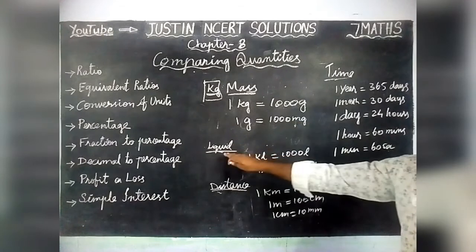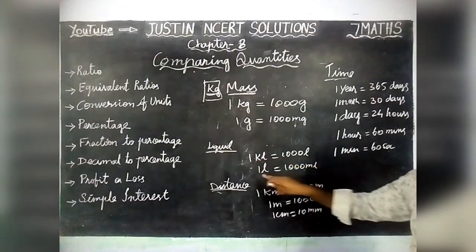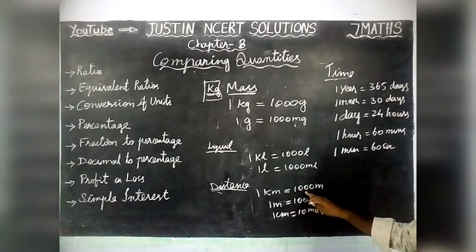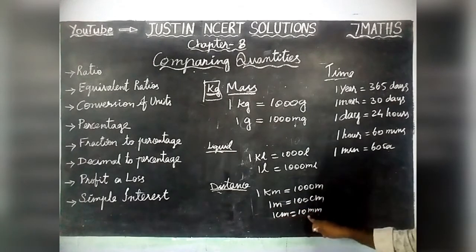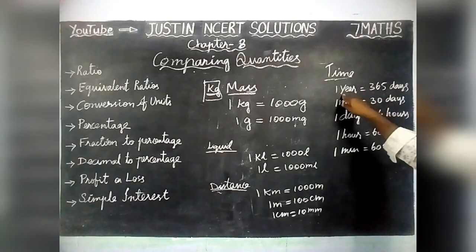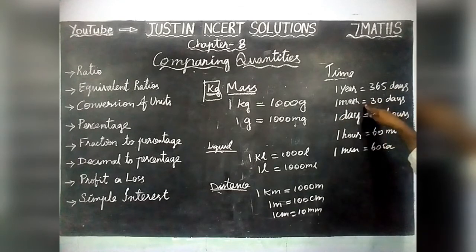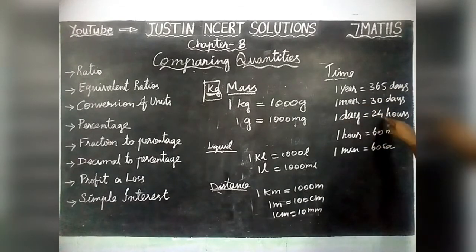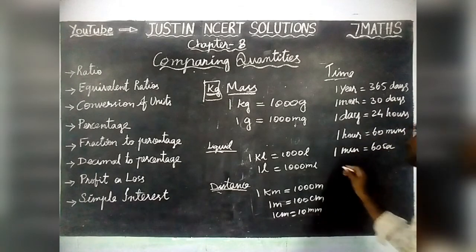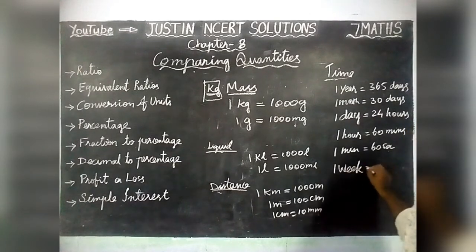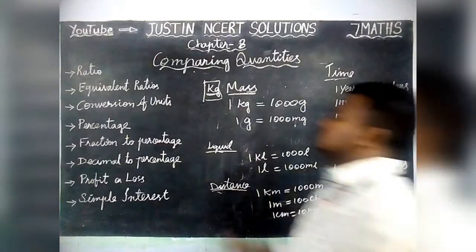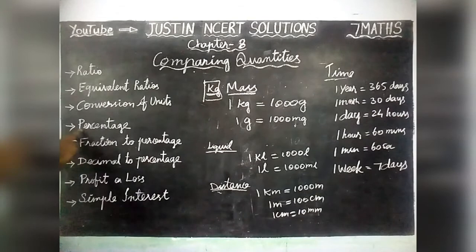To summarize conversions: For Liquid — 1 Kiloliter is equal to 1000 Liters, 1 Liter is equal to 1000 Milliliters. For Distance — 1 Kilometer equals 1000 Meters, 1 Meter equals 100 Centimetres, 1 Centimetre equals 10 Millimetres. For Time — 1 Year equals 365 Days or 12 Months, 1 Month equals 30 Days, 1 Day equals 24 Hours, 1 Hour equals 60 Minutes, 1 Minute equals 60 Seconds, 1 Week equals 7 Days. These are all the important Conversions of Units.